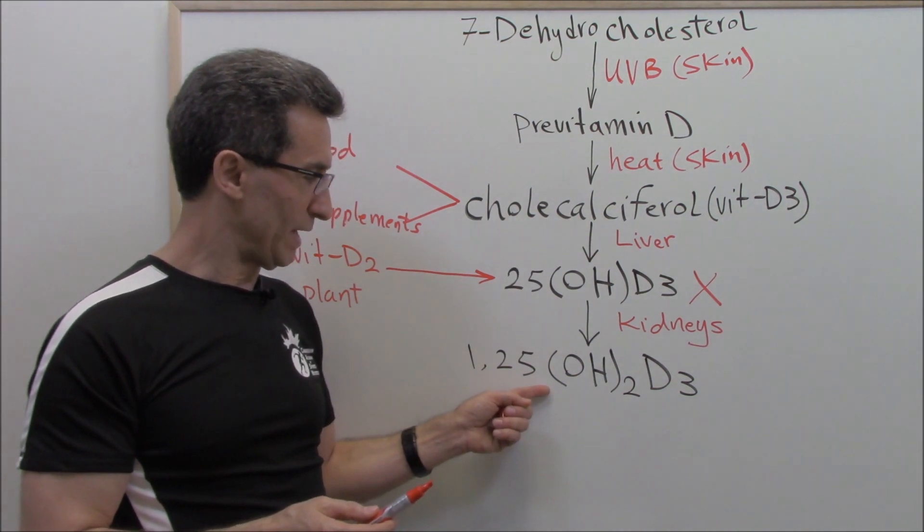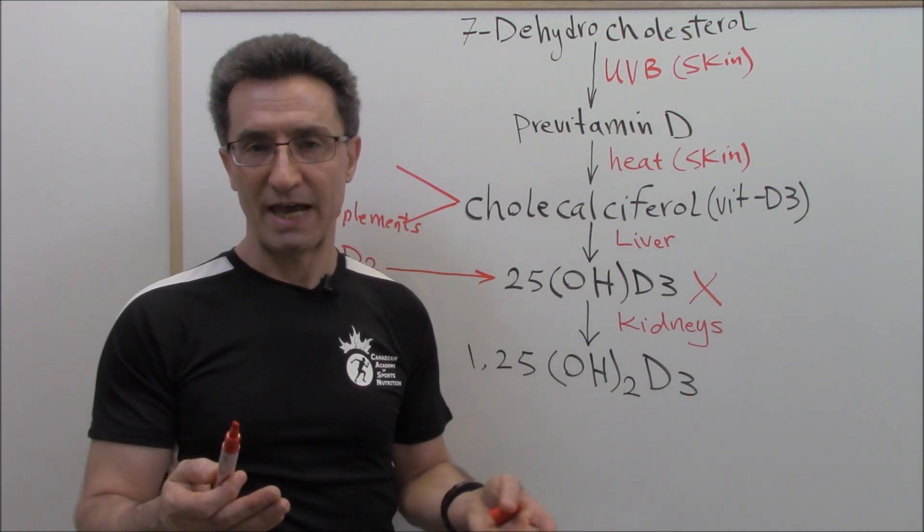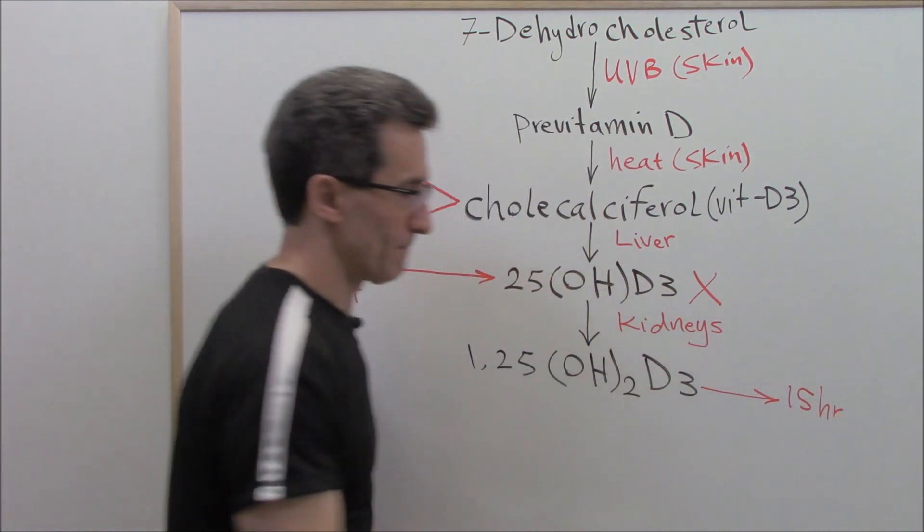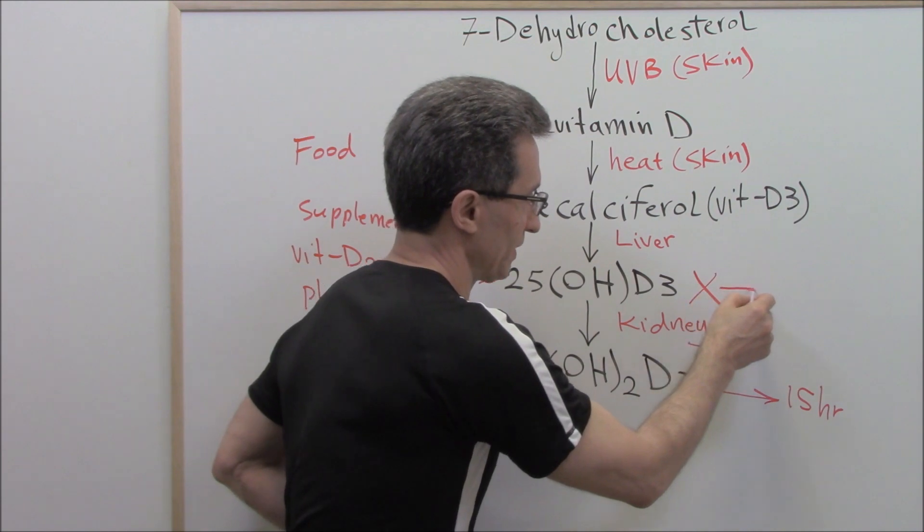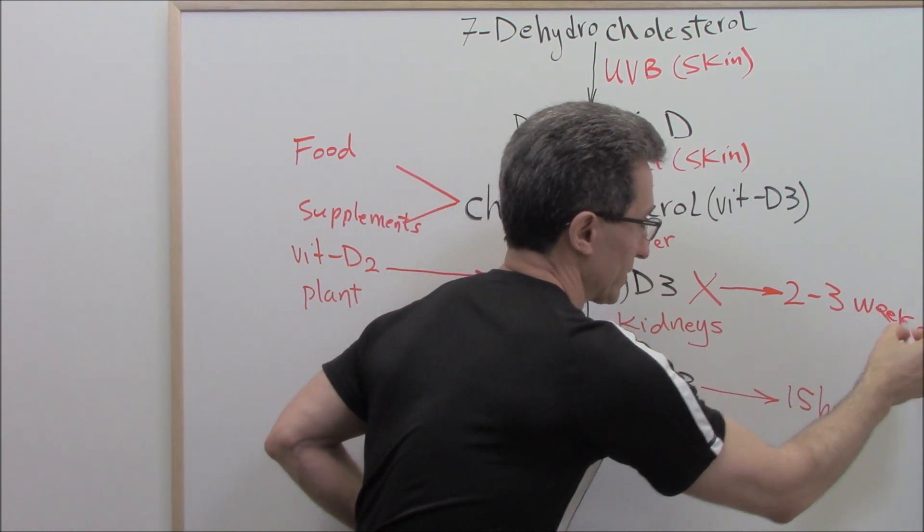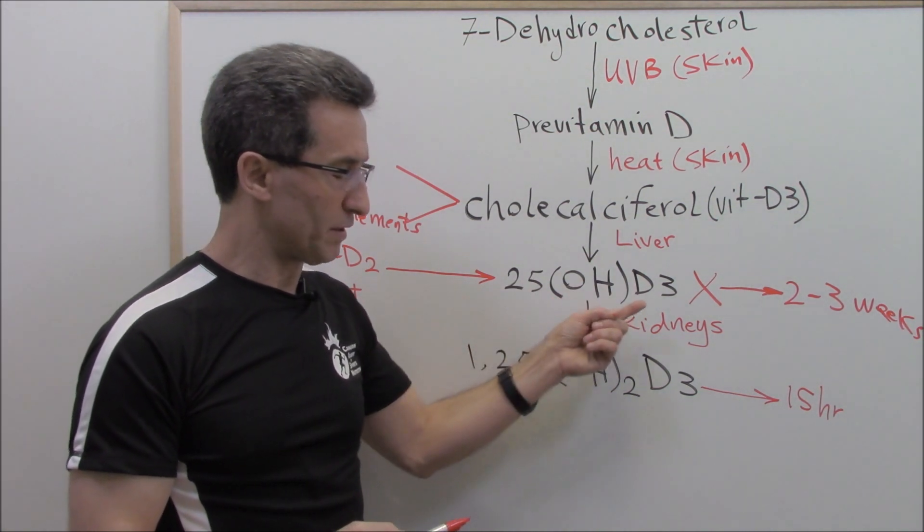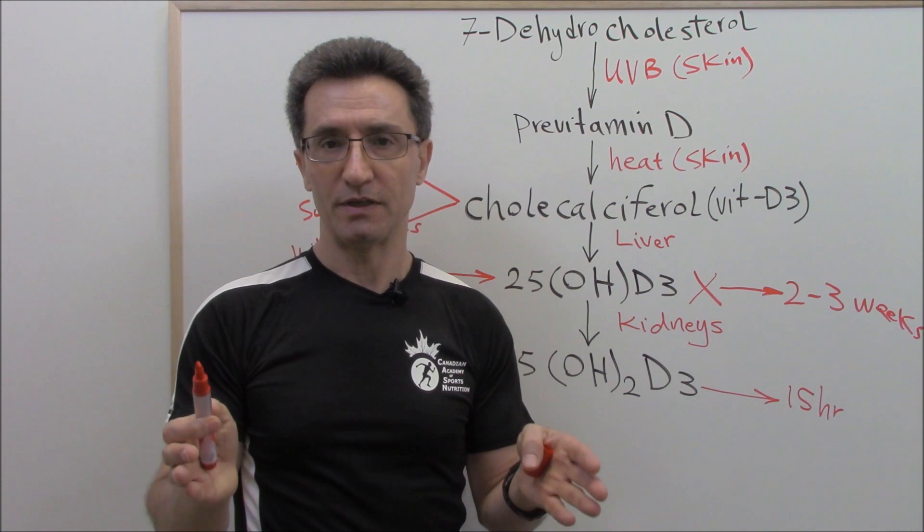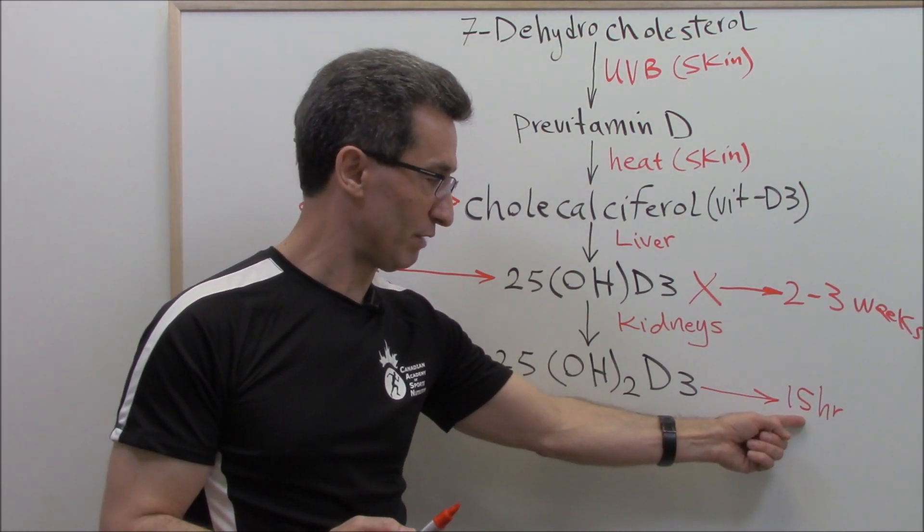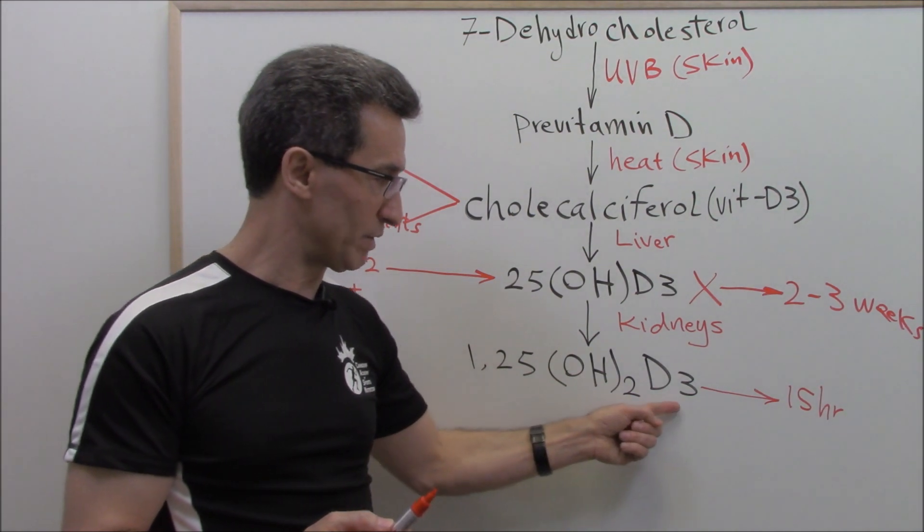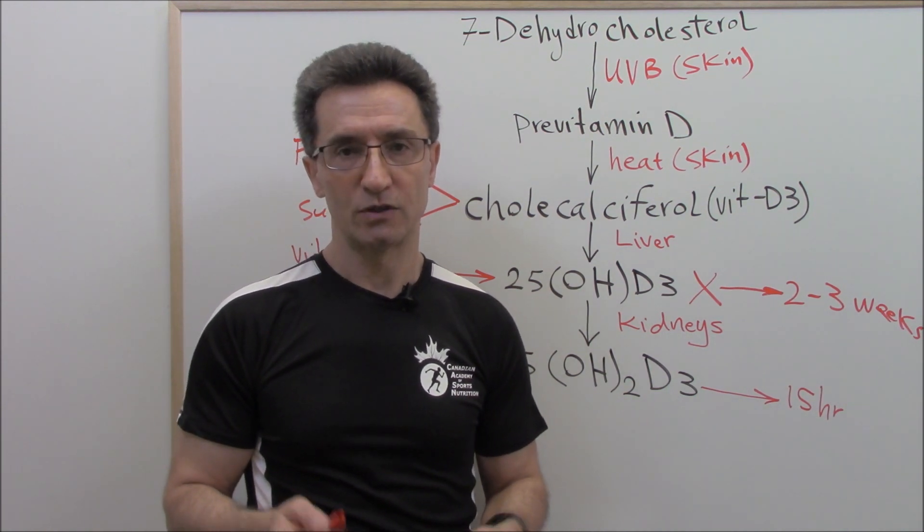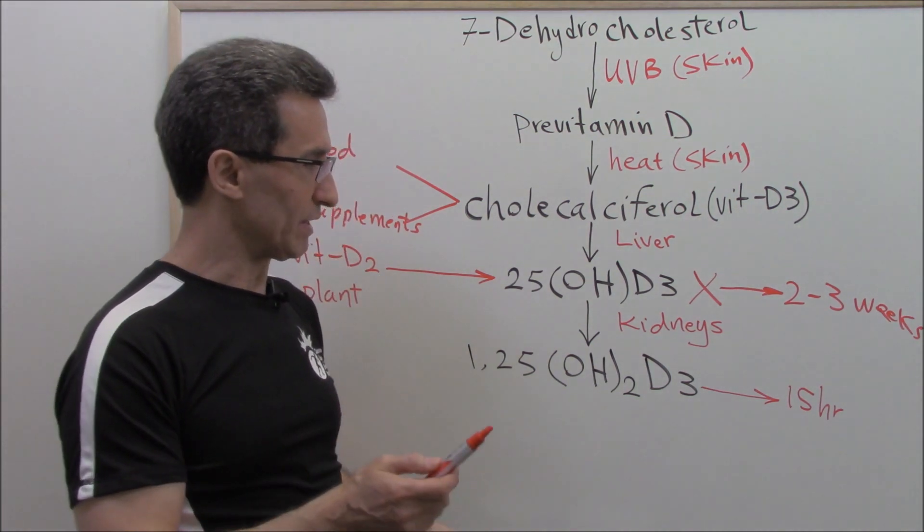They do not check the active form of vitamin D in the blood for two reasons. The active form of vitamin D has a very short half-life, about 15 hours. But 25-hydroxyvitamin D3 has a longer half-life, about two to three weeks. So 25-hydroxyvitamin D3 is the best marker of vitamin D status in the body, not the active form, because the active form has a short half-life and is tightly regulated by other hormones such as PTH, phosphate and calcium.